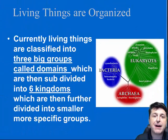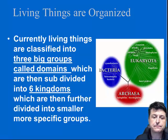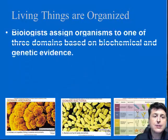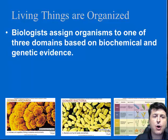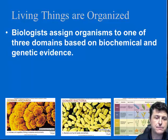We then subdivide those domains into our next largest group, which are going to be kingdoms. The three domains are Archaea, Bacteria, and Eukaryota, and they are put into these groups based upon both biochemical and genetic evidence.